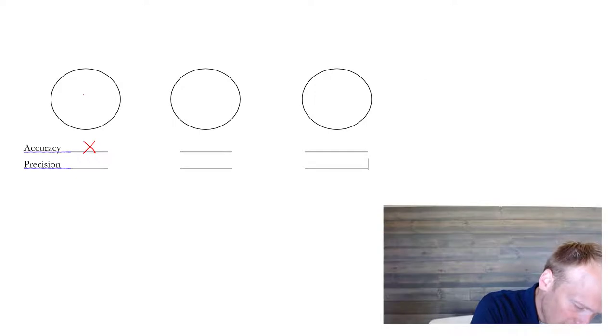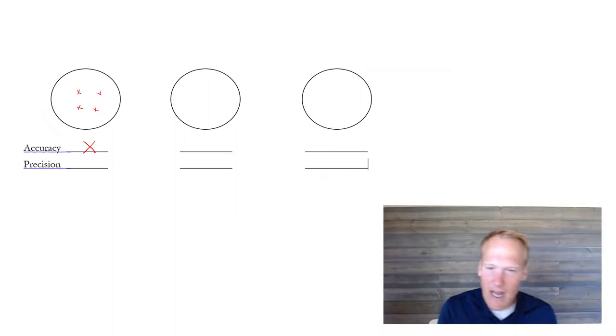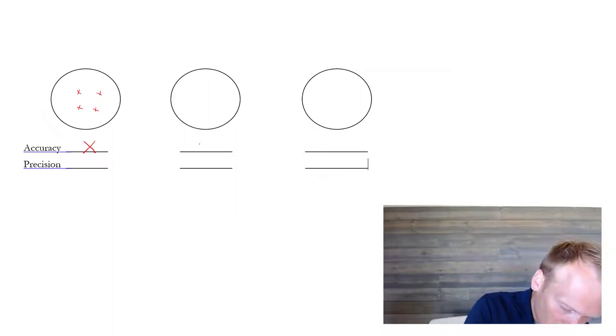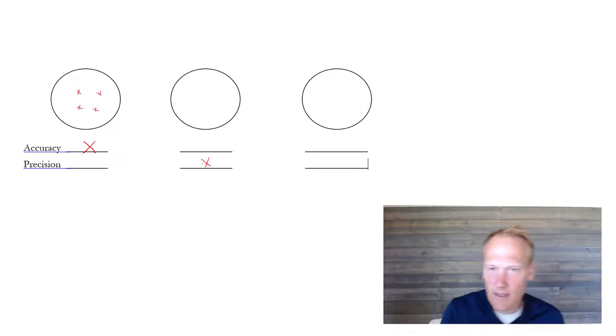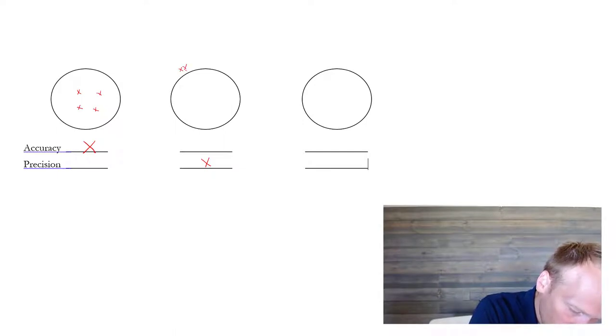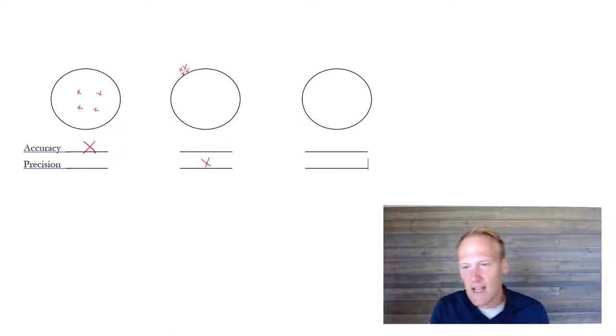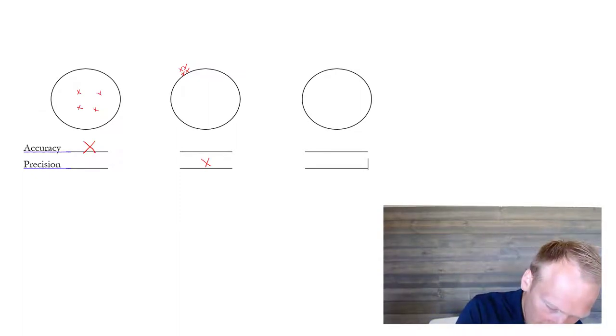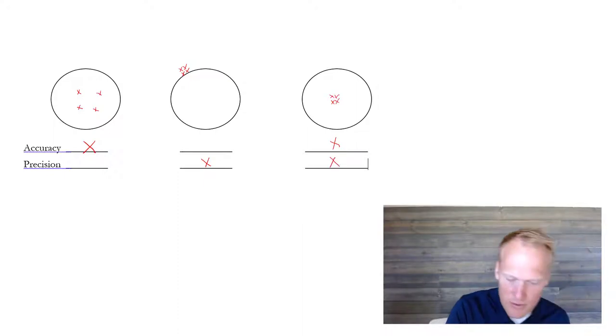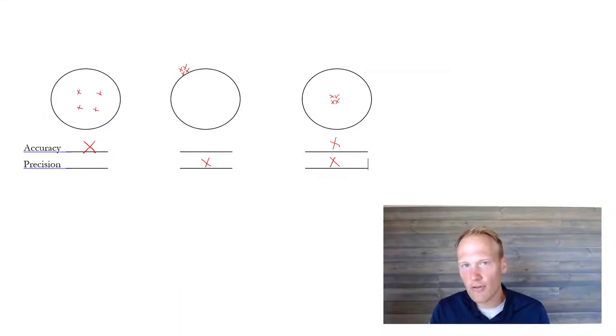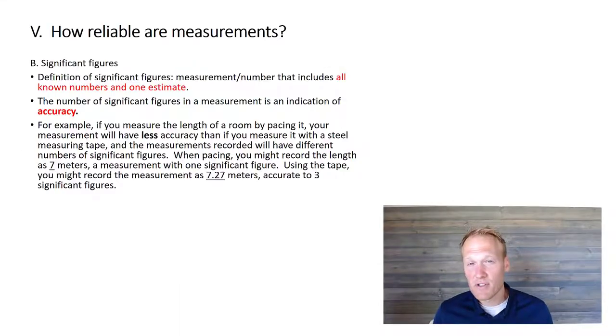If I was going to throw something with precision but not accurately, that would mean that I'm repeating the same thing over and over again. I'm just not hitting the target or I'm just not close to the actual measurement. And then, obviously, if I wanted to do both, it would be being able to measure accurately over and over and over again. The way that accuracy and precision represent themselves in measurements is through something called a significant figure.